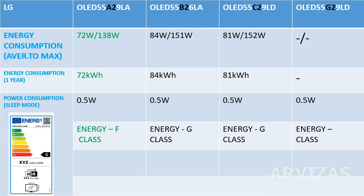Energy consumption: A2 model ranges from 72W minimum to 103.8W maximum. B2 model is 84W to 151W. C2 model is 81W to 152W. G2 model energy consumption is not yet known. Standby power consumption is 0.5W. Energy class: A2 model is F class, while B2, C2, and G2 models have G energy class.